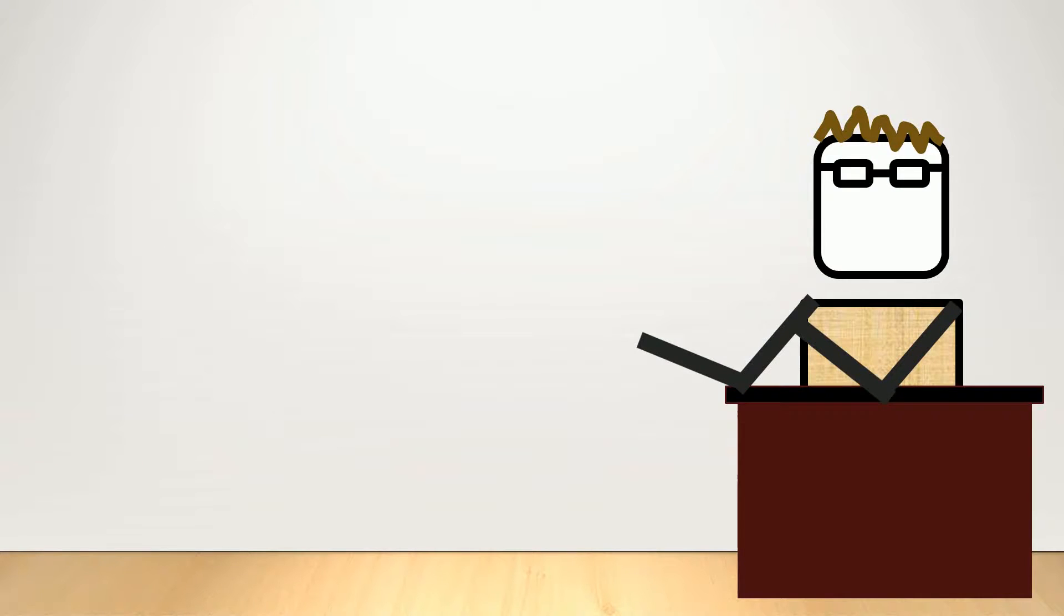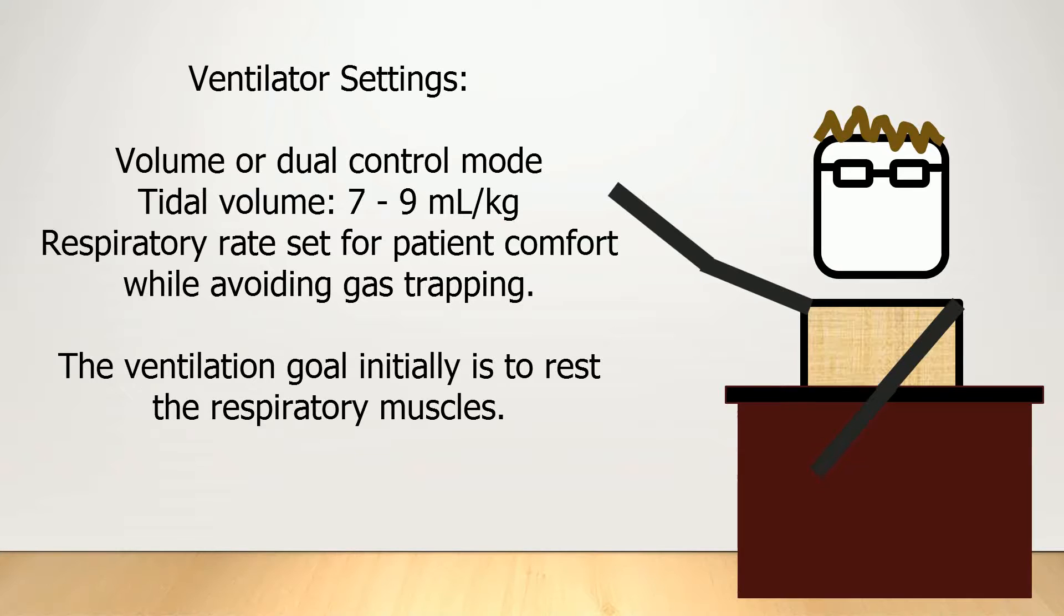Many of the principles we discussed in the section on asthmatics are pretty much the same as when it comes to ventilating for COPD, particularly in the acute phase. Most of the time, a dual mode or volume control mode of ventilation is a good choice, and using a tidal volume of 7 to 9 milliliters per kilogram is probably pretty reasonable. This will ensure a reasonable minute ventilation while watching the pressures that are being generated.